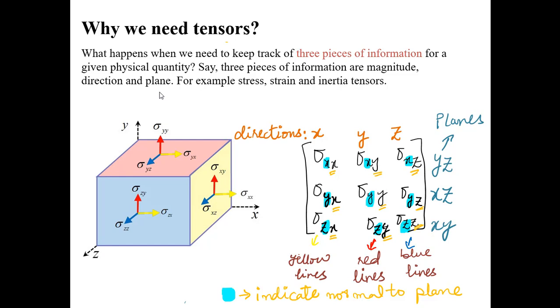Tensors are used to represent such physical quantities when you have more pieces of information. You can say that tensors is a generalization of scalars and vectors. Here are some examples of tensors: stress, strain and inertia. We will discuss these in later lectures.